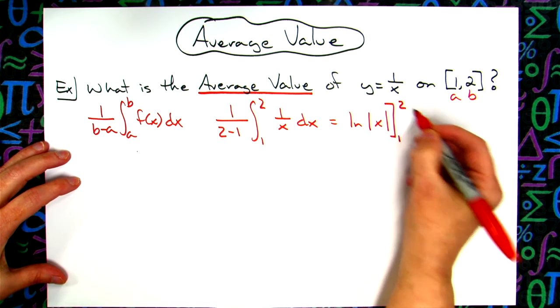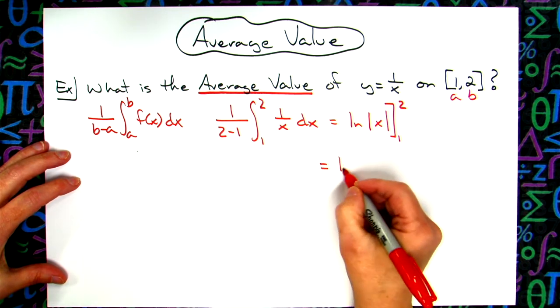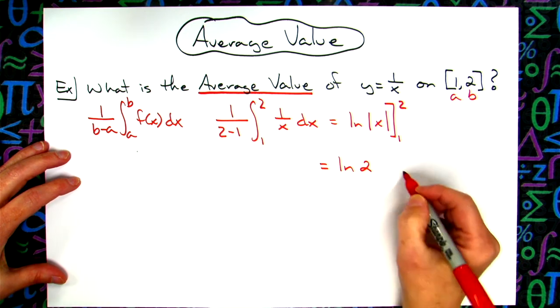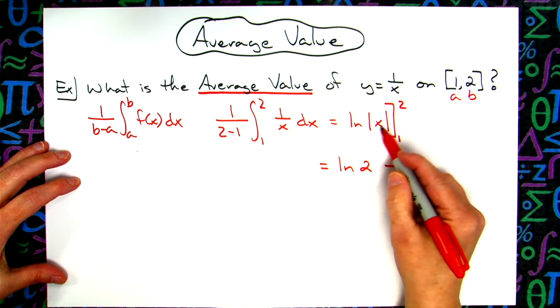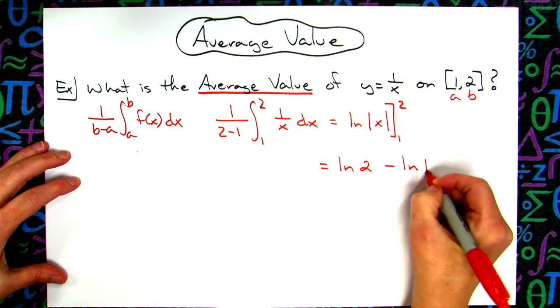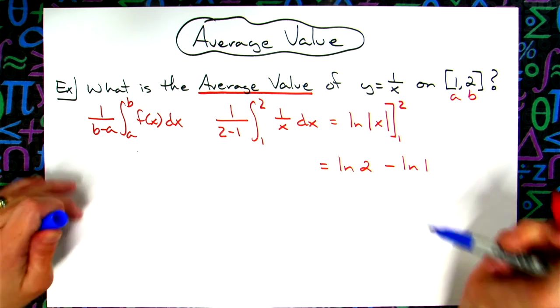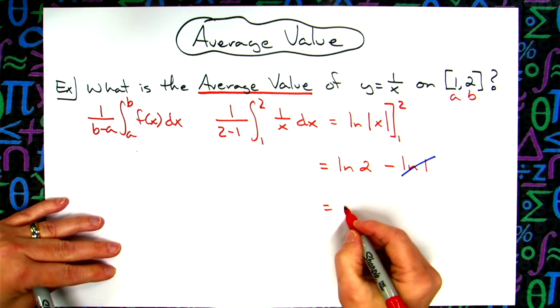Going ahead and plugging 2 in, I'll have natural log of the absolute value of 2, which is 2, so I'm going to drop the absolute value bars. Then plugging in 1, absolute value of 1 is 1, so I'll have natural log of 1. You need to have memorized that natural log of 1 is 0, so that basically falls out. We have an overall average value of this function on this interval being the natural log of 2.